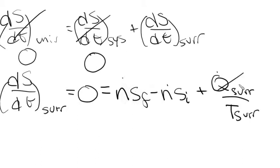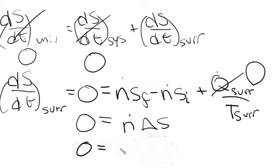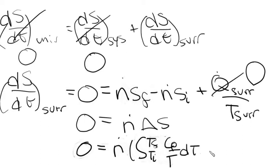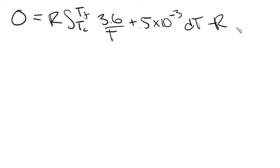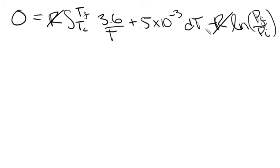Since the process is adiabatic, Q = 0, so that term vanishes. We're left with 0 = N-dot·ΔS. The change in entropy equals the integral from T_i to T_f of Cp/T dT minus R·ln(P_f/P_i). Substituting our Cp expression, we get 0 = R × ∫(T_i to T_f) [3.6/T + 0.5×10⁻³] dT − R·ln(P_f/P_i). The R's cancel, and we plug in P_f = 1 bar and P_i = 10 bar.